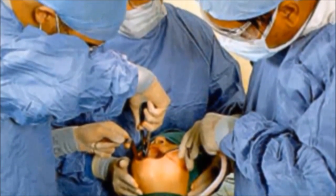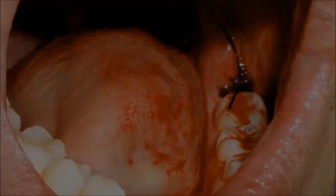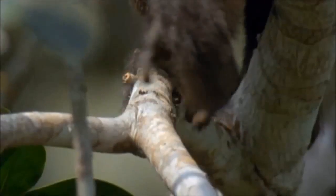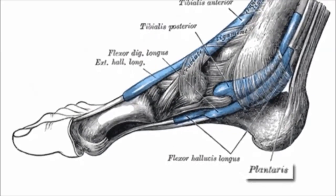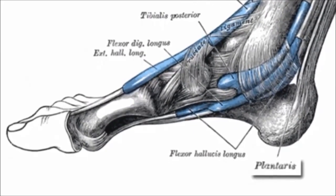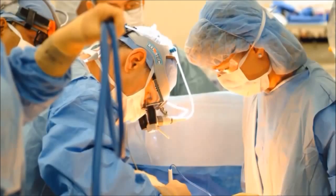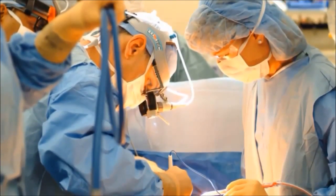The plantaris muscle is used by animals for gripping and manipulating objects with their feet, something you see with apes who seem to be able to use their feet just as well as their hands. Humans have this muscle as well, but it is now so underdeveloped that it is often taken out by doctors when they need tissue for reconstruction in other parts of the body. The muscle is such an unimportant part of our anatomy that 9% of all humans are born without this structure.